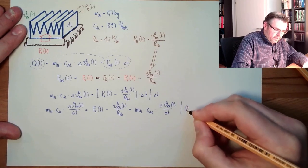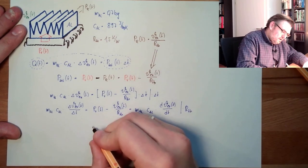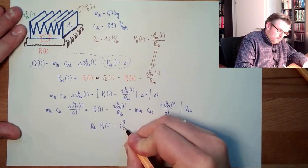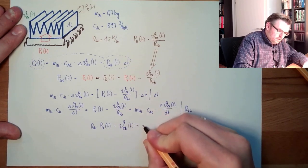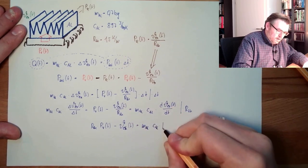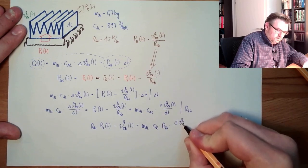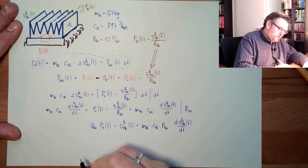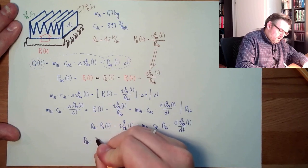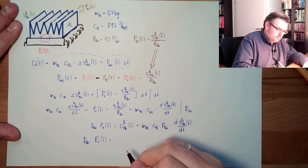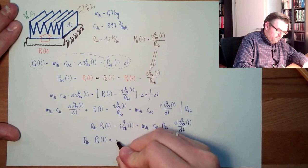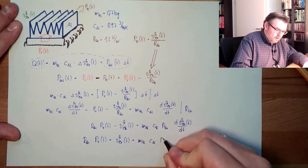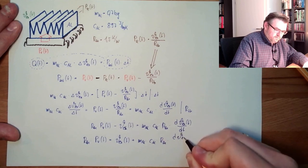Now we multiply through by Rth: Rth multiplied by PV, minus the excessive temperature, equals M-aluminum times C-aluminum times Rth times the derivation of the excessive temperature. Separating the variables, it's written: Rth times PV equals the excessive temperature plus M-aluminum times C-aluminum times Rth times the derivation of the excessive temperature.